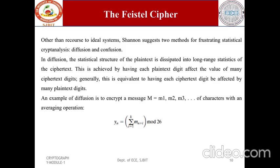In diffusion, the statistical structure of the plaintext is dissipated into long-range statistics of the ciphertext. This is achieved by having each plaintext digit affect the value of many ciphertext digits, and each ciphertext digit be affected by many plaintext digits. An example is encrypting a message using an averaging operation — adding k successive letters to get a ciphertext letter y_n — so that letter frequencies in the ciphertext become more nearly equal.